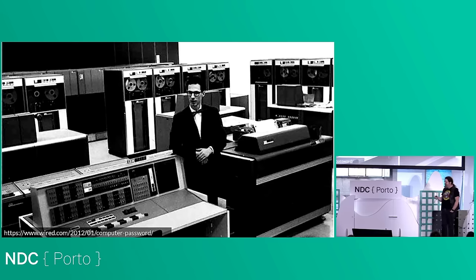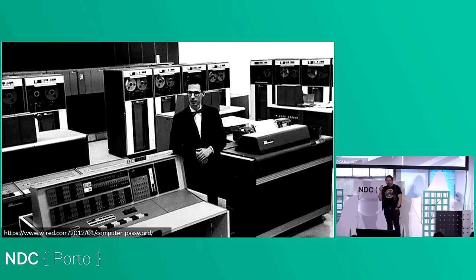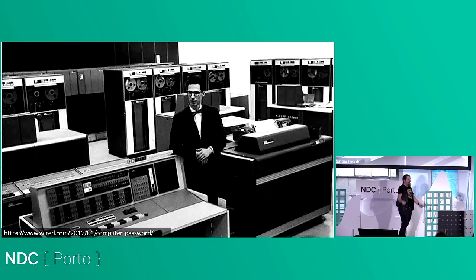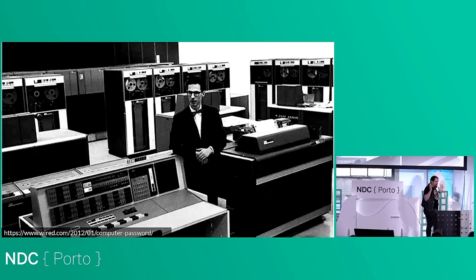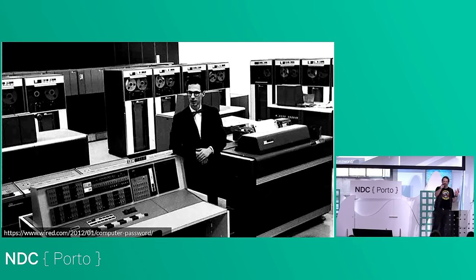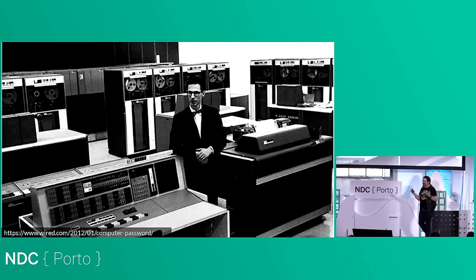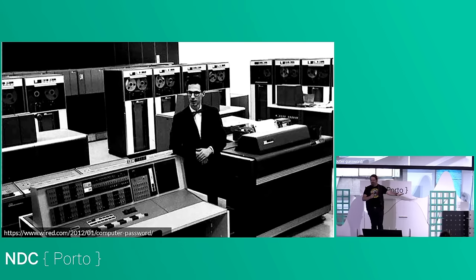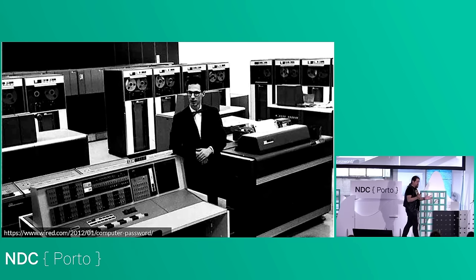We're going to start at the beginning — this is 1961, a computer called the Compatible Time-Sharing System. Email is older than networks. The CTSS didn't connect to any other computers — it was a massive bank of tape drives the size of refrigerators in a university. You could leave messages for other users: you could send mail, but it wasn't really sending because it didn't go anywhere. It got stored on tape, and when your colleagues came in the next day and logged in, they'd see the messages. This was like leaving post-its on a really expensive refrigerator.